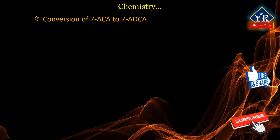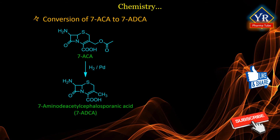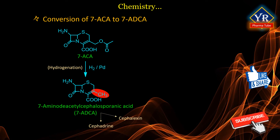7-ACA can be converted to 7-amino-des-acetylcephalosporonic acid (7-ADCA) by hydrogenolysis of 7-ACA over a palladium catalyst. The 7-ADCA is then the starting compound for the orally effective 3-methyl cephalosporins such as cephalexin and cephradine, which all have the 3-methyl group as a common feature.